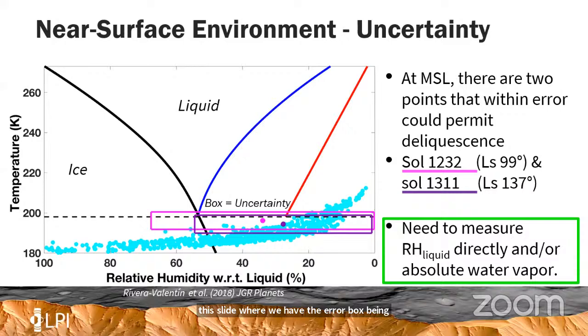The error is rather large because of that translation, so we need to either measure directly relative humidity with respect to liquid or measure the absolute water vapor.